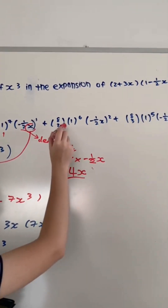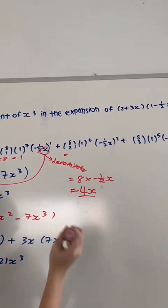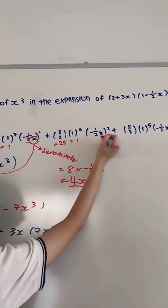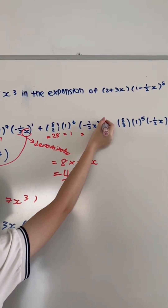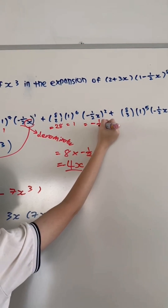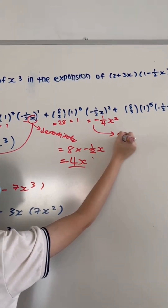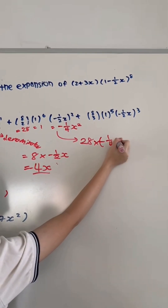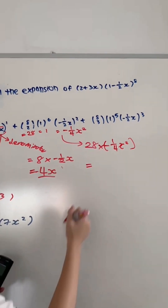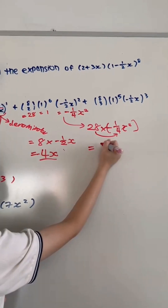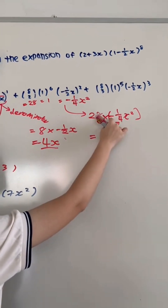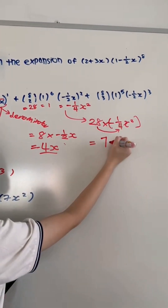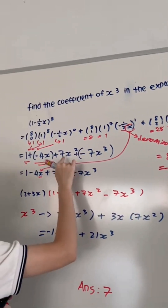For the third term: 8C2 in the calculator equals 28. Since 1^6 equals 1, we have 28 times (-½x)^2. That is 28 times (1/4)x², which gives 7x². Since the power is even, the minus sign is removed. The third term is 7x².